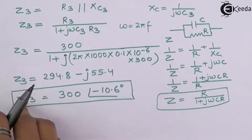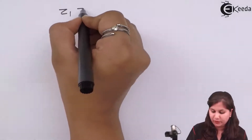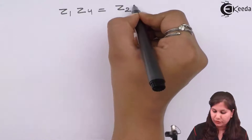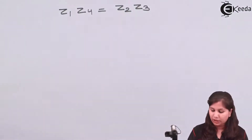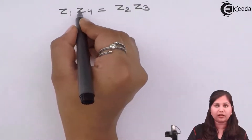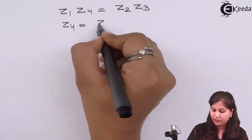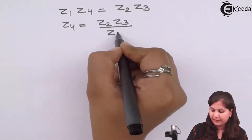Now we apply the general balance equation for the AC bridge: Z1·Z4 = Z2·Z3. We want to find Z4, so Z4 = Z2·Z3 / Z1.